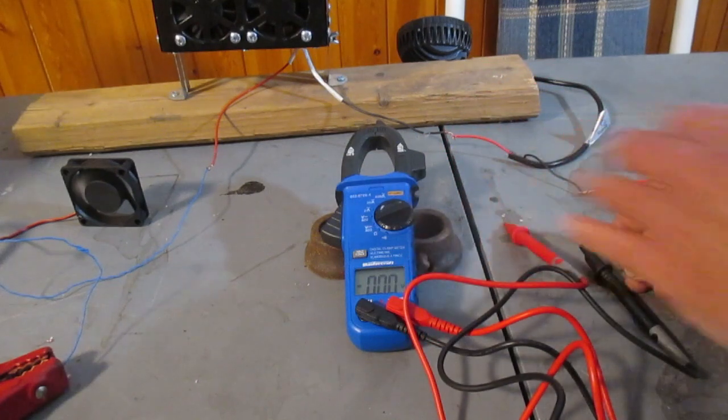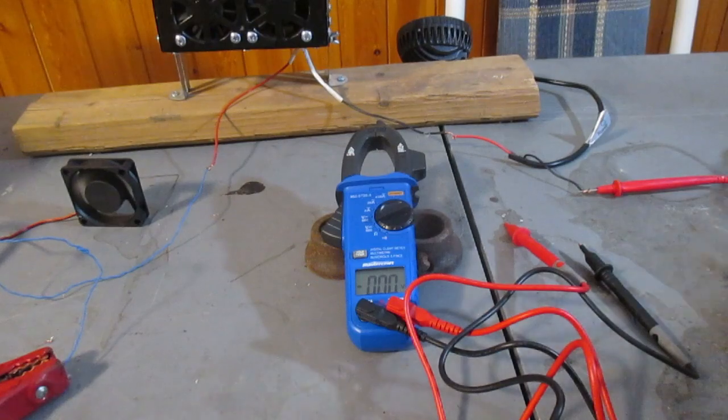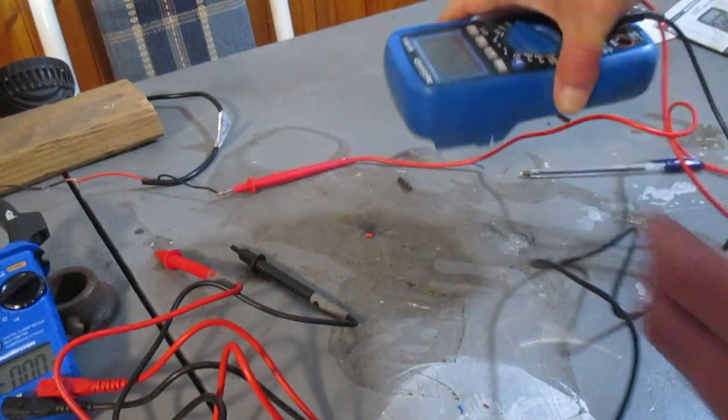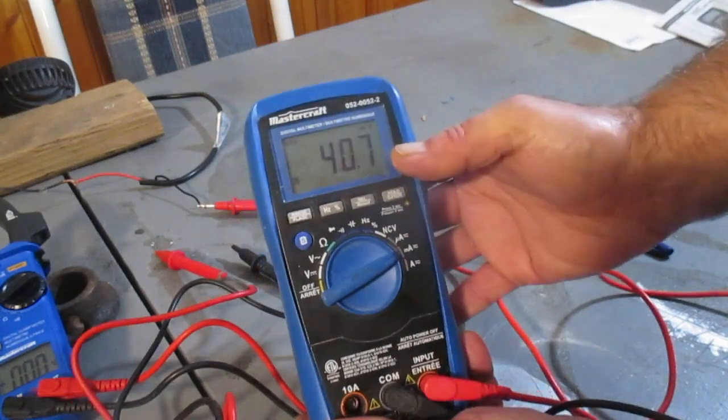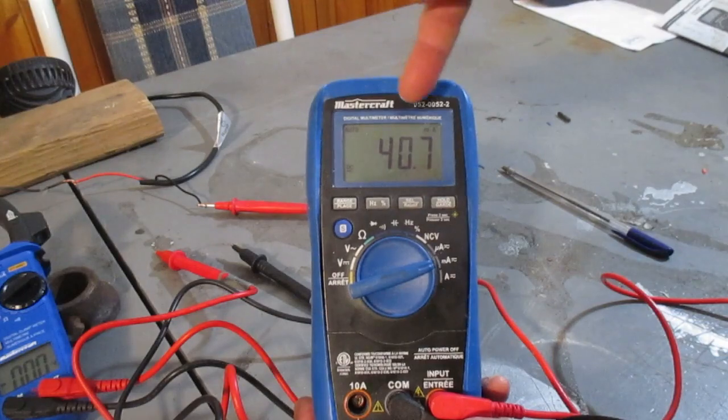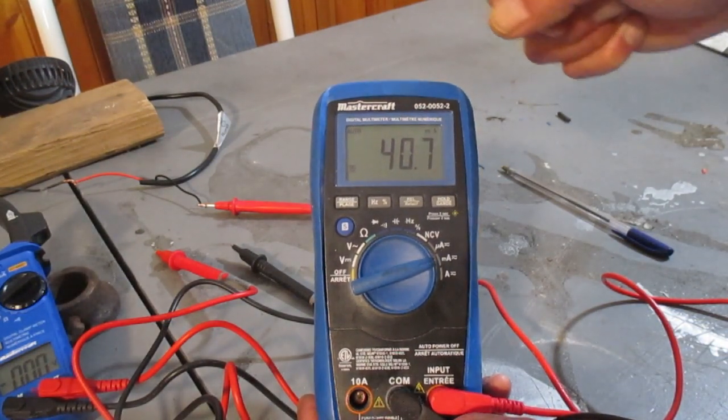And I put this other meter over here. This one does measure current. And just for the sake of illustration, I put that in the whole current in this circuit is 40 milliamps - 40.6 milliamps.